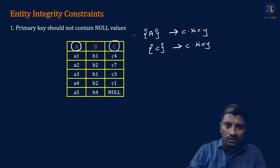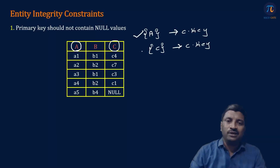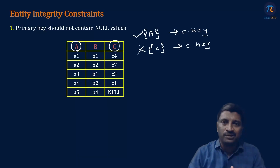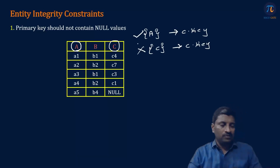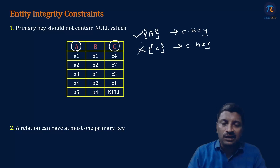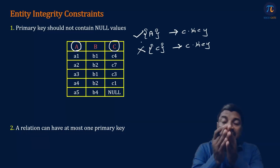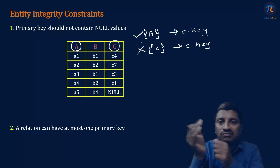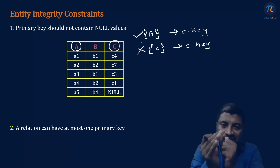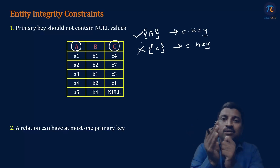So here A can be selected as a primary key, but C should not be selected as a primary key. The next one is: a relation can have at most one primary key. That means even if the relation is having more than one candidate key, we can select only one of them as a primary key.